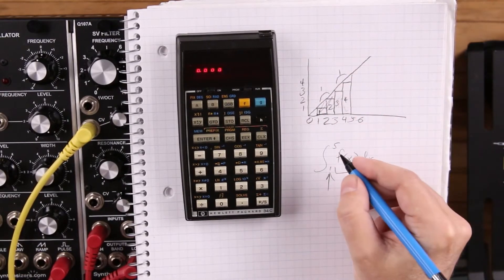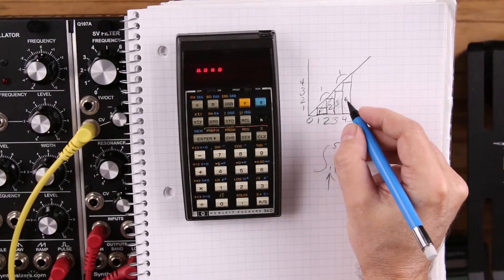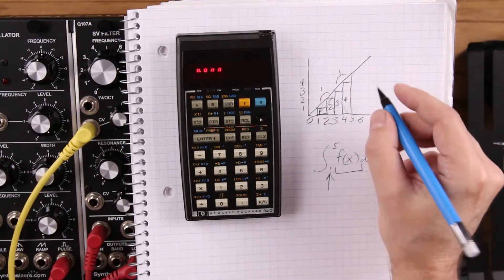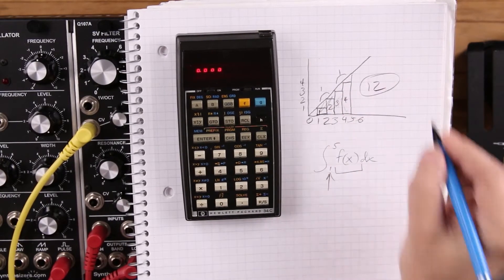So one plus two plus three plus four plus one plus one is 12. That should be our answer.